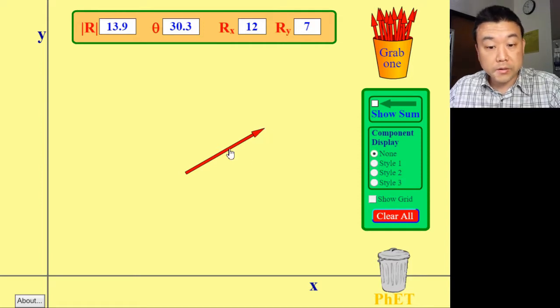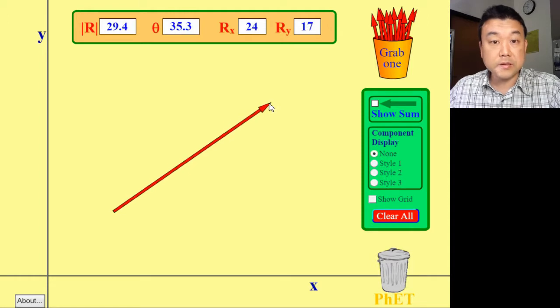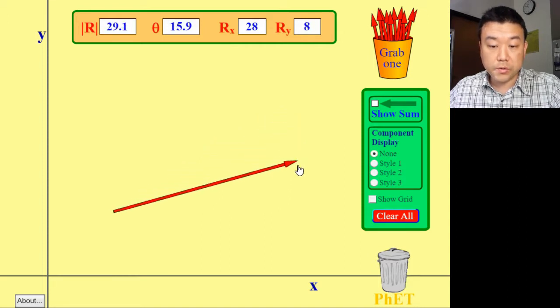A vector as a mathematical quantity is best described as an arrow. With this arrow, I can change its length, I can change its direction, or I can change both.